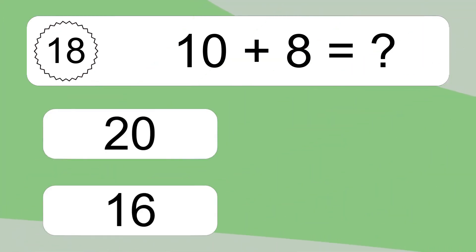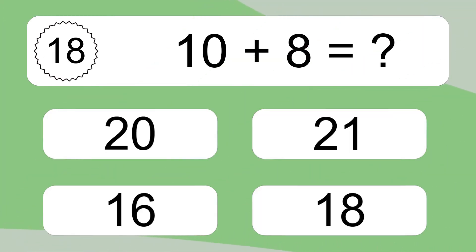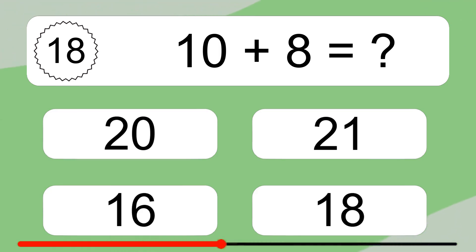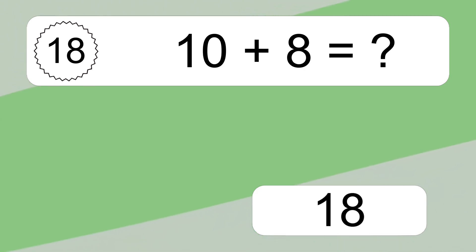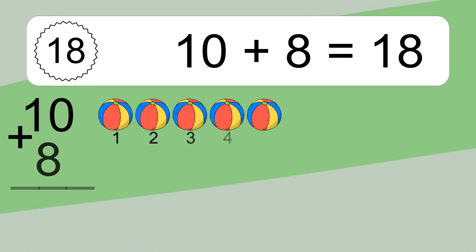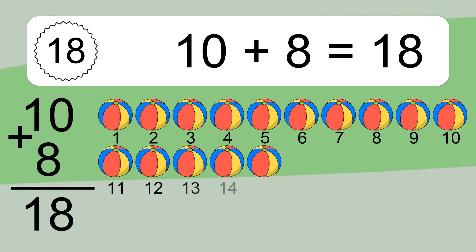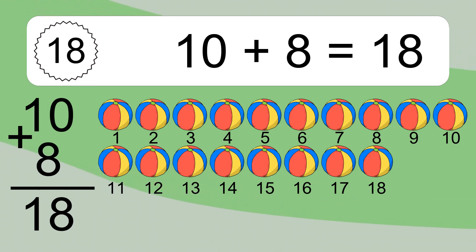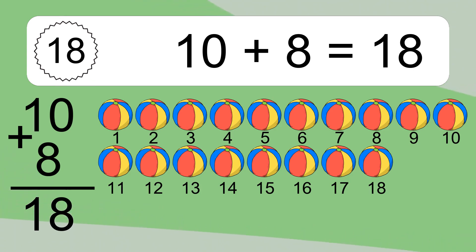10 plus 8 equals what? 10 plus 8 equals 18. Let's count it. 1, 2, 3, 4, 5, 6, 7, 8, 9, 10, 11, 12, 13, 14, 15, 16, 17, 18.